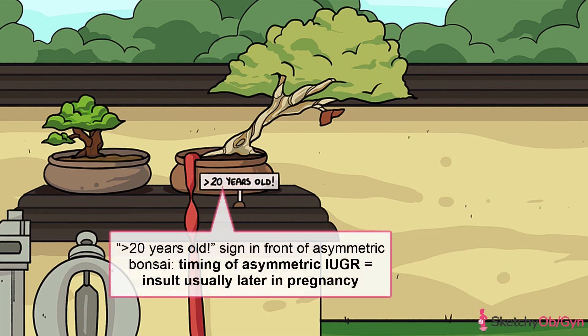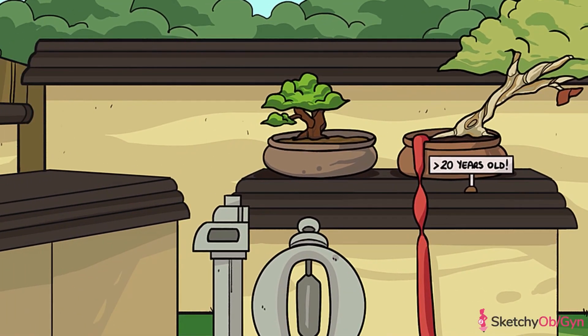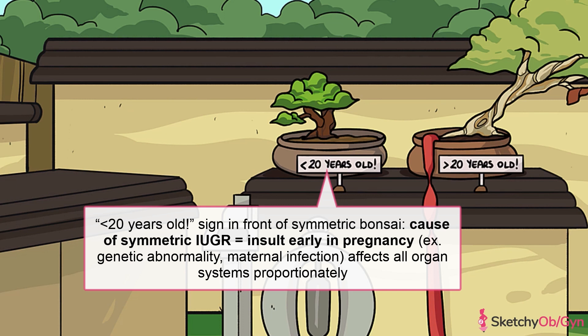Another feature of asymmetric IUGR is that it's due to an insult that occurs later in pregnancy, usually after 20 weeks gestational age, which is why this asymmetric bonsai tree is more than 20 years old. In contrast, symmetric IUGR is usually due to an insult very early in pregnancy, which is why this symmetric bonsai tree is younger. Symmetric IUGR means the fetus is globally small — the head and abdomen are proportionately decreased in size — and is usually due to a genetic abnormality or maternal infection that affects the entire growth potential of the fetus.